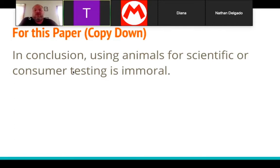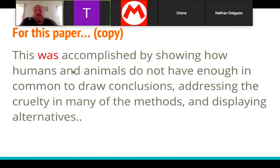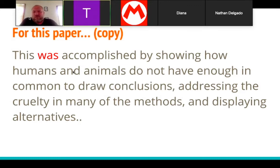For example, if my paper were on animal testing: 'In conclusion, using animals for scientific or consumer testing is immoral' — I'm just restating it. In the opening paragraph you said 'this will be accomplished,' but now you say 'this was accomplished' because it's past tense. So if my paper is on testing on animals, I'd say: 'This was accomplished by showing how humans and animals do not have enough in common to draw a conclusion, addressing cruelty in many of the methods, and displaying alternatives.' The idea is you're basically turning the intro paragraph around on its head — restating your thesis and restating your how.